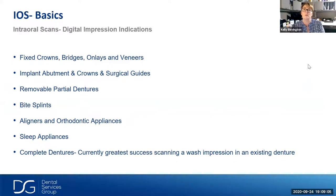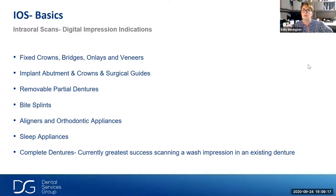Anything you can take a polyvinyl siloxane impression of, you can take a digital impression of, and we can then fabricate those devices from it — crowns, implant crowns, bridges, veneers, partials, bite splints, aligners, sleep appliances. You name it, and it's being done digitally now.